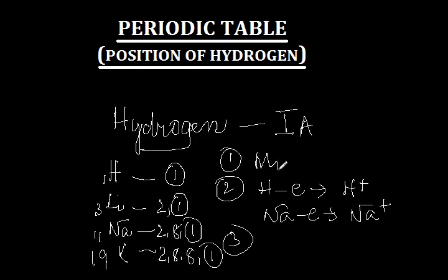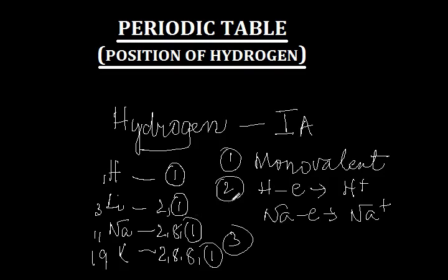Point number 1 was monovalence. Now the main difference between halogens and alkali metals: halogens also have one valence and are monovalent, and alkali metals are also monovalent. But alkali metals have one valence electron in the outer shell, whereas halogens have seven electrons in the outer shell. Hydrogen also has one electron in the outer shell, like the alkali metals. Considering this, it is more appropriate to place hydrogen in group 1A than in group 7.